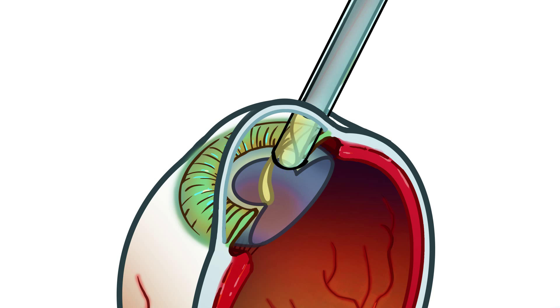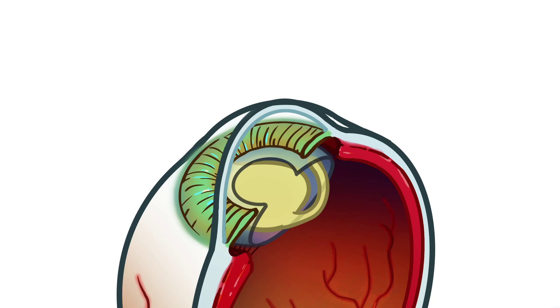The new lens is rolled up and injected through the tiny opening in the cornea, where it unfolds and is positioned in the exact same place as the old one.